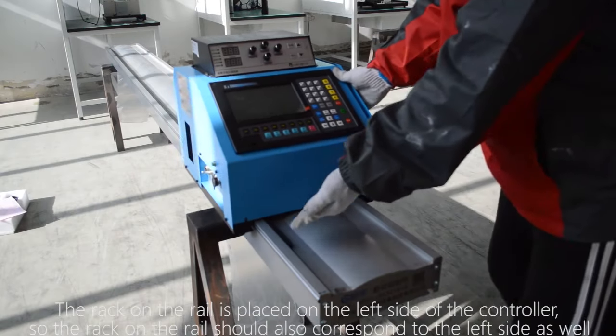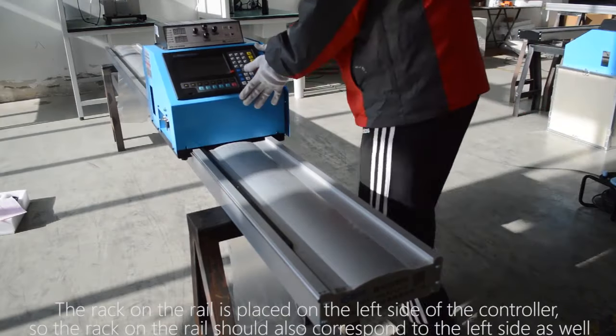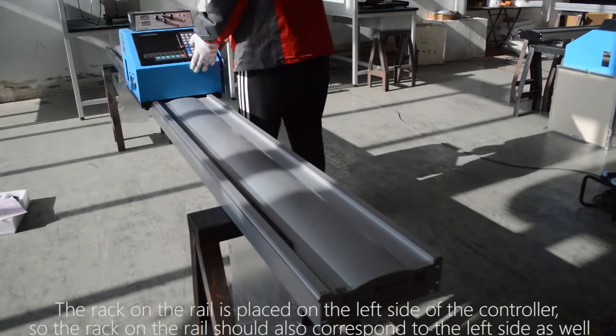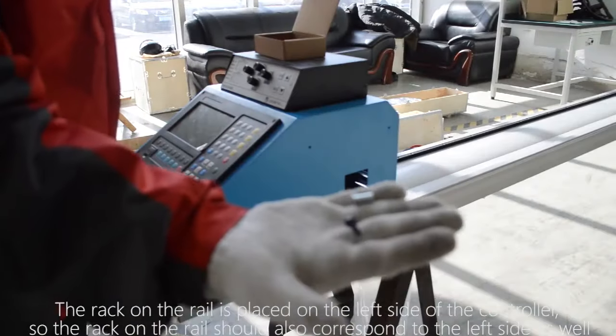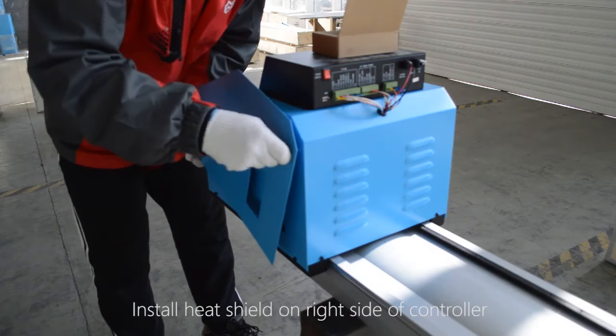The rack on the rail is placed on the left side of the controller, so the rack on the rail should also correspond to the left side as well. Install heat shield on right side of controller.